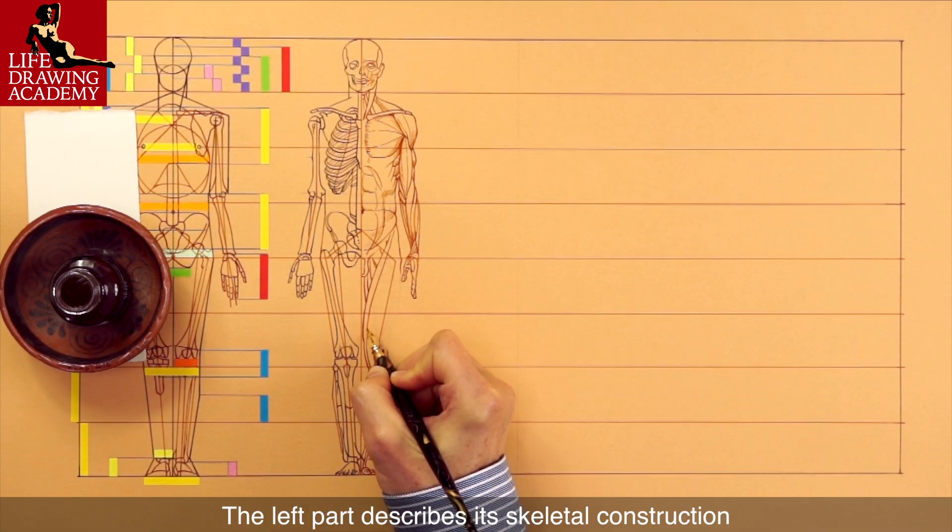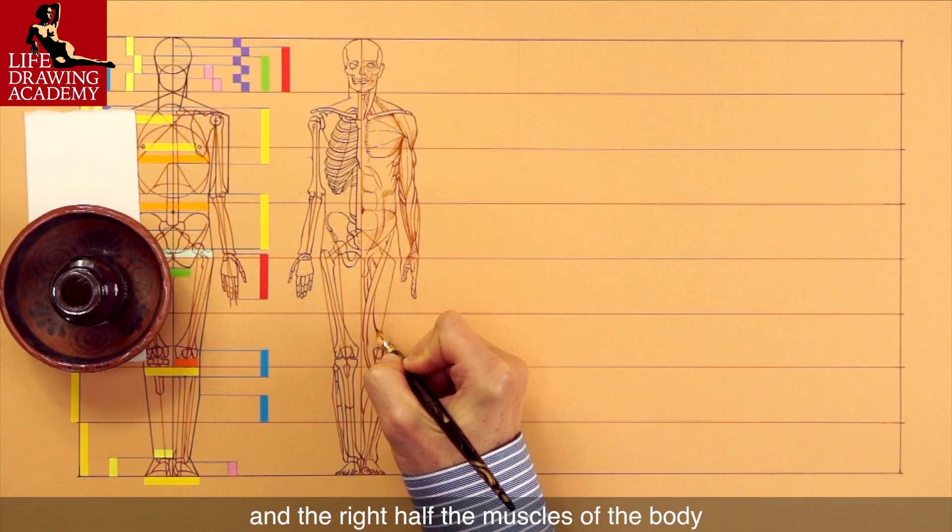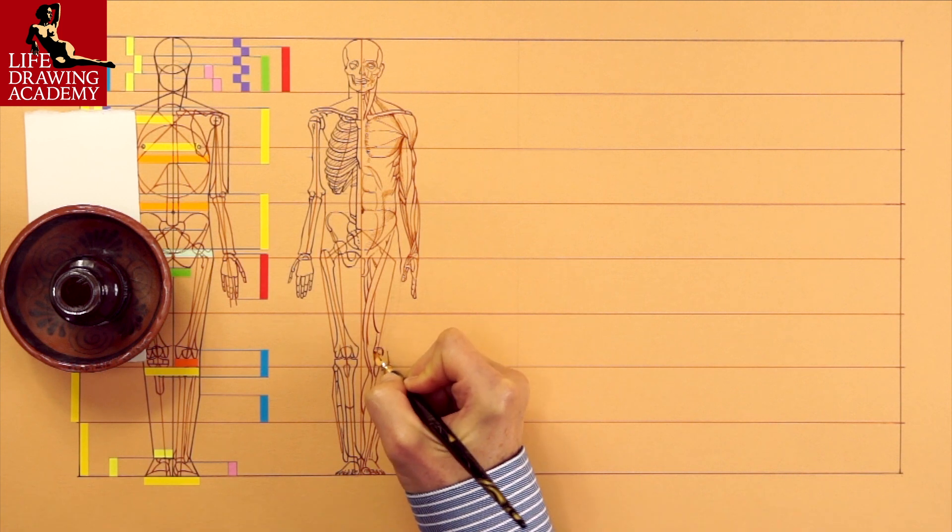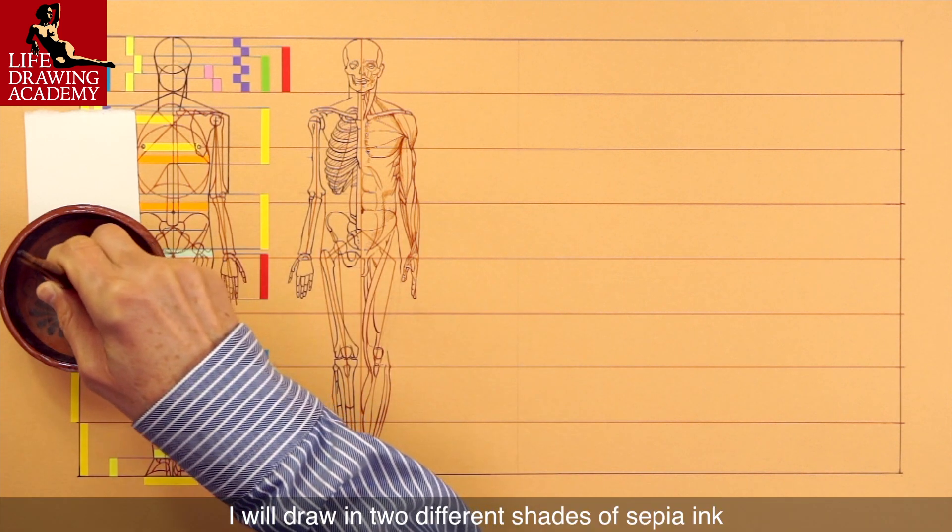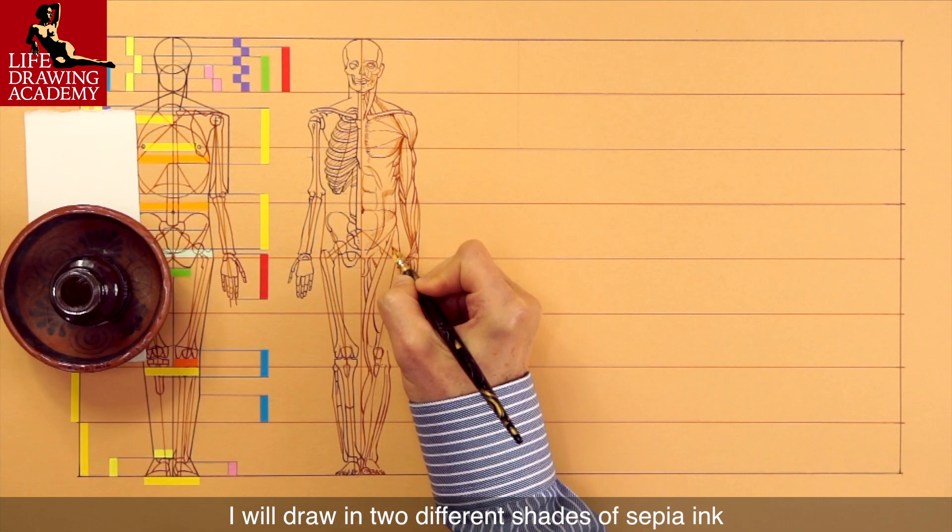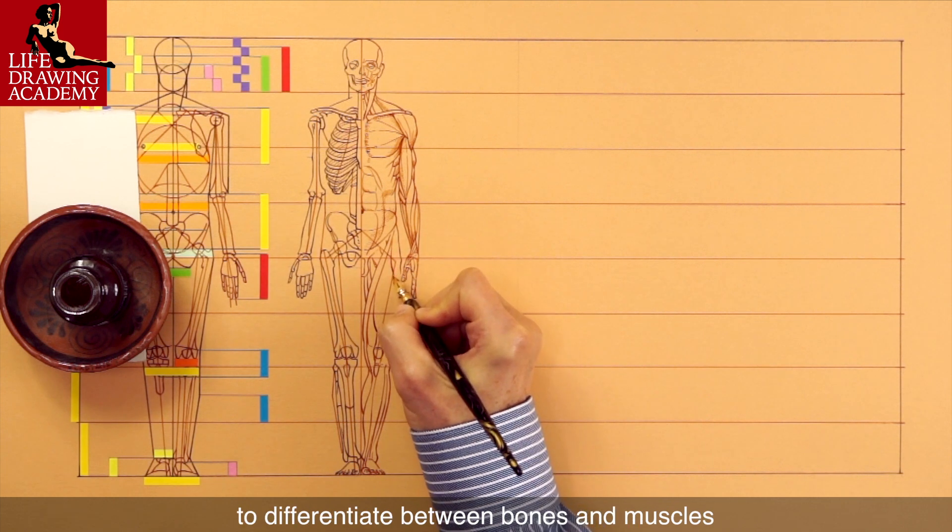The left part describes its skeletal construction, and the right half the muscles of the body. I will draw in two different shades of sepia ink to differentiate between bones and muscles.